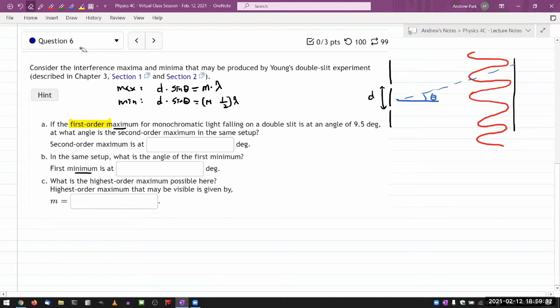This will, M will go from, so M equals zero will refer to the central maximum, and there's no such thing as central minimum. And the first order, second order, they will be meaningful starting with M equals one, M equals two, and so on. So the first order refers to when you have M equals one. So let me just label this angle as theta one, at what angle is the second order maximum in the same setup. Okay, so it's going to be asking for what is theta two.